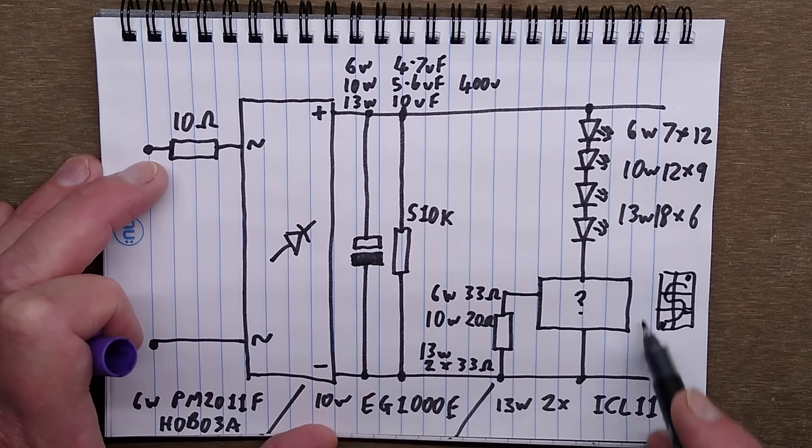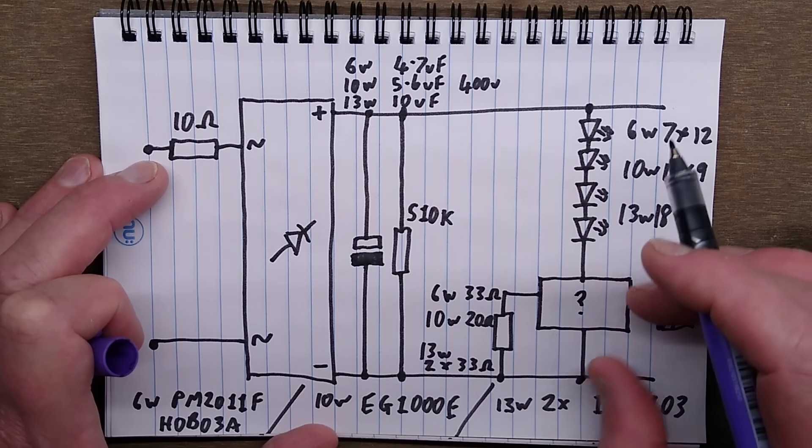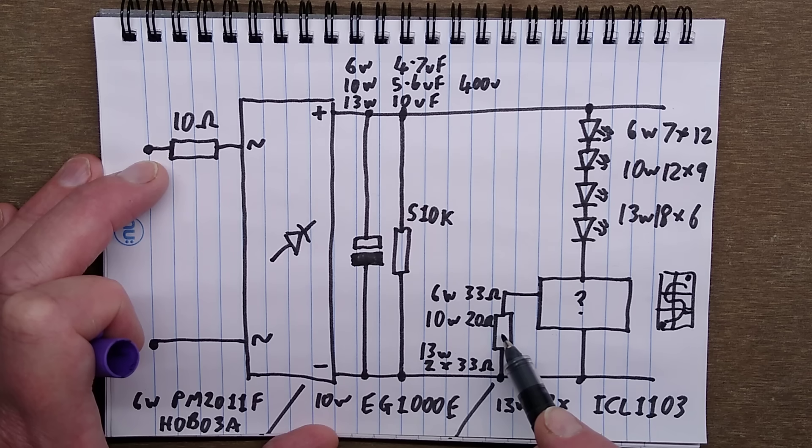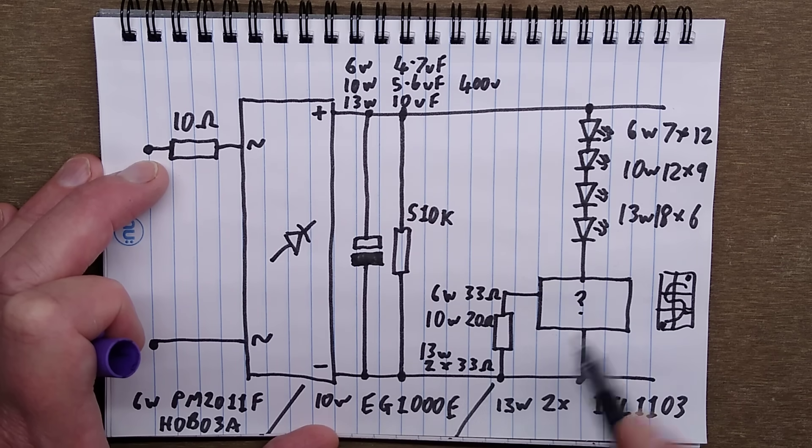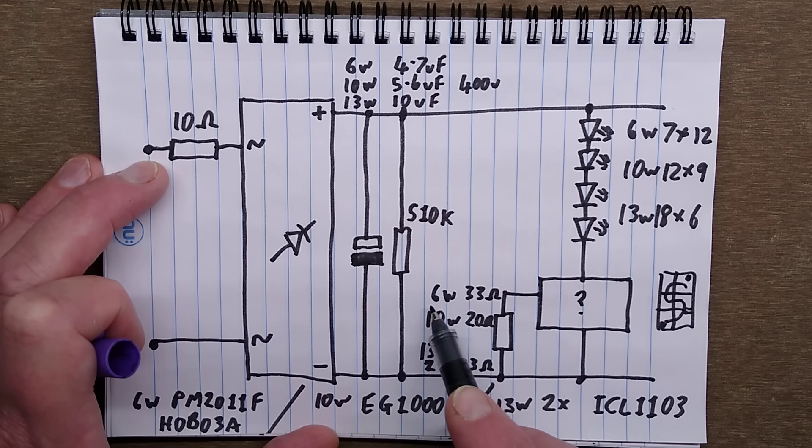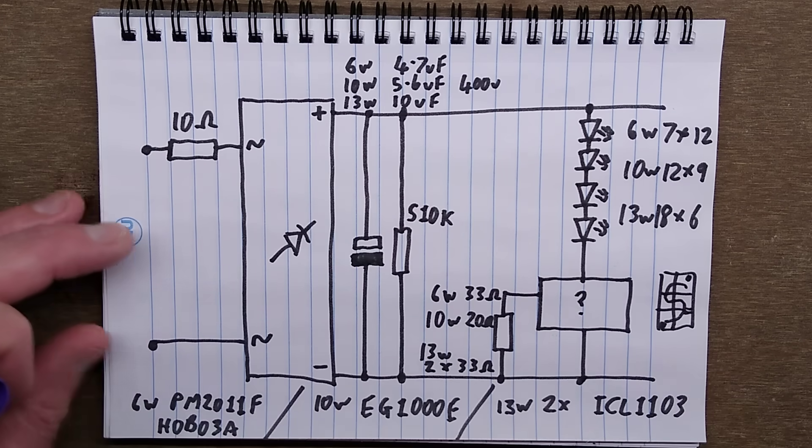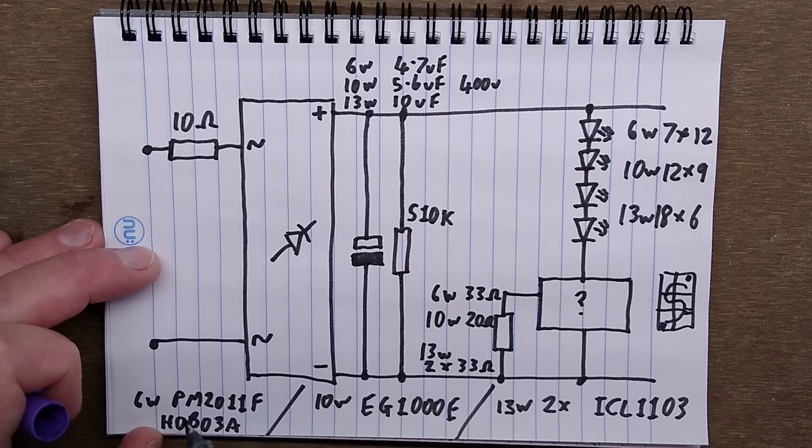Then it comes down to the current regulator chip. This is a linear current regulator, which means it effectively changes its resistance to match the sensed current flowing through it. You set the current by an external resistor. In the case of the 6 watt one, it's a 33 ohm resistor. The 10 watt one has a 20 ohm resistor. In the 6 watt one, the chip was a PM2011F or HOBO3A. The 10 watt one had a different chip: EG1000E.